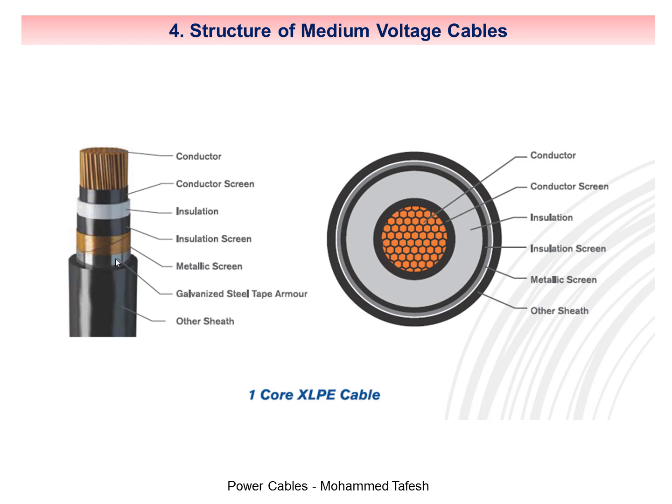Regarding the outer metal shell — armored or metallic sheath — cables are classified as armed and unarmed. Armed cable is used to withstand mechanical stress, such as when buried directly in the ground with dirt and fine sand.